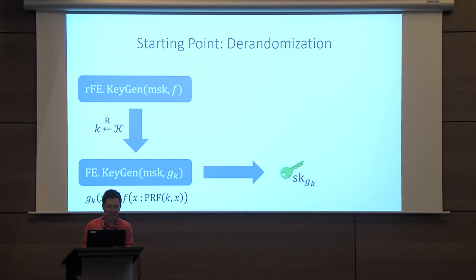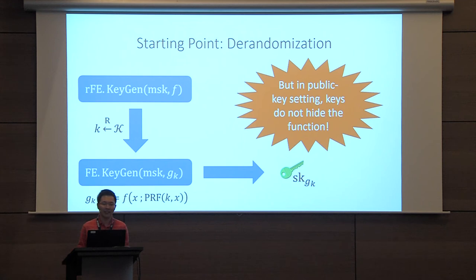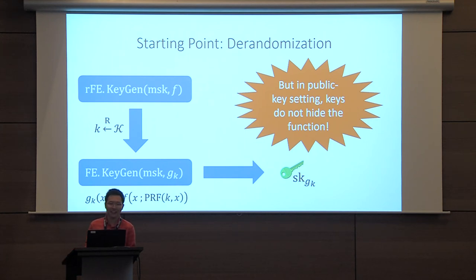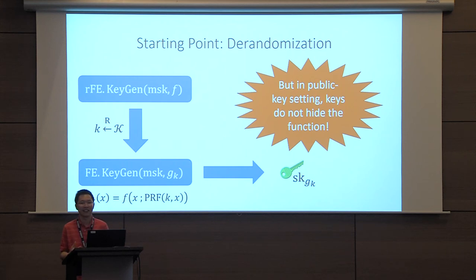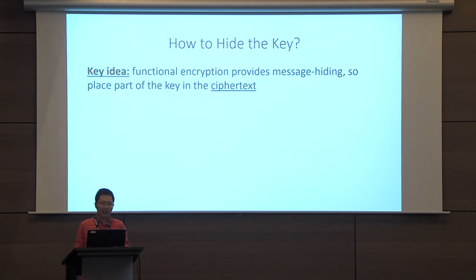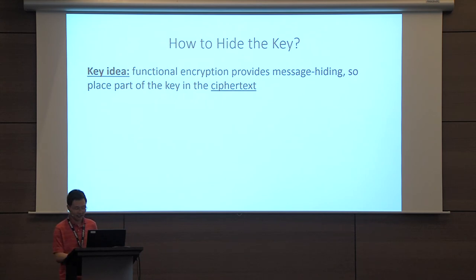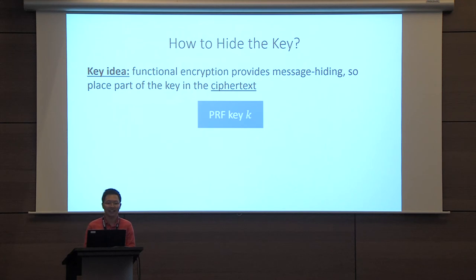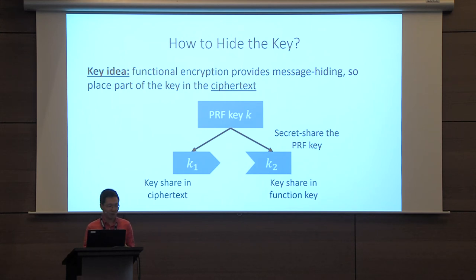This alone is not enough. In the public key setting, keys do not hide the function — function hiding is very difficult to achieve, with many lower bounds on what's possible. An evaluator holding a decryption key can read off the bits of the PRF key, and once that key is public, you can no longer appeal to PRF security to argue the randomness is hidden. So we instead split the PRF key into two pieces: one embedded in the ciphertext and one in the actual function key.